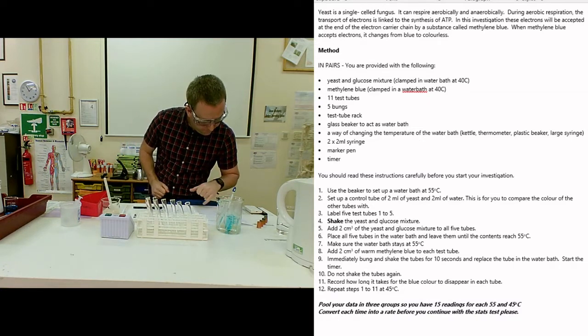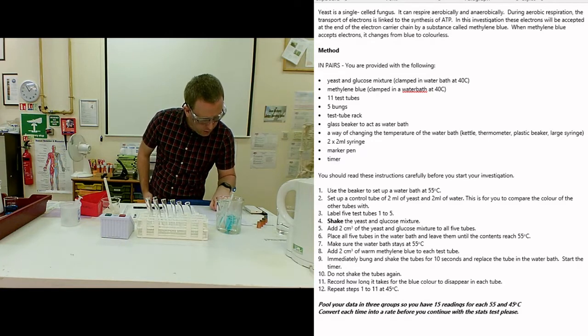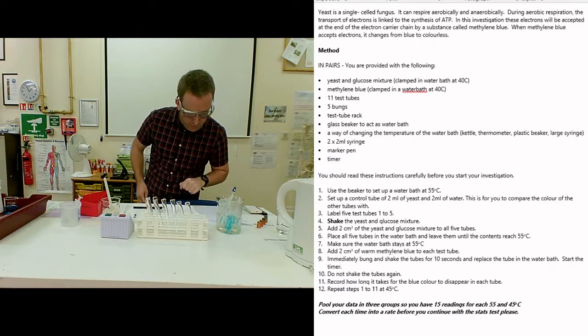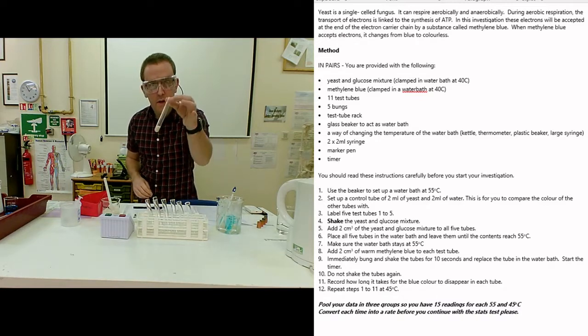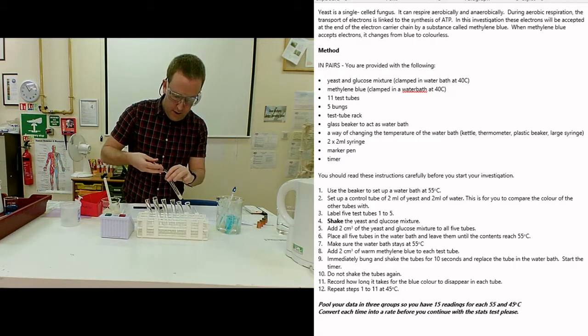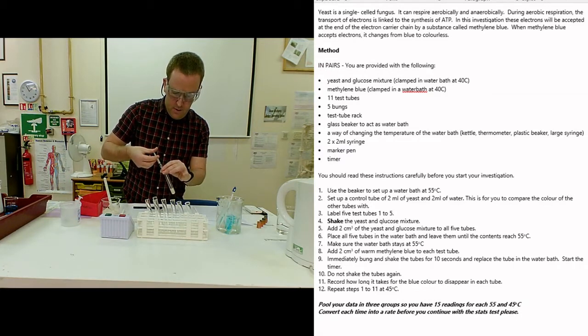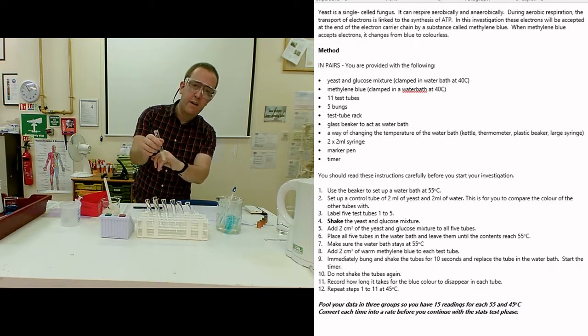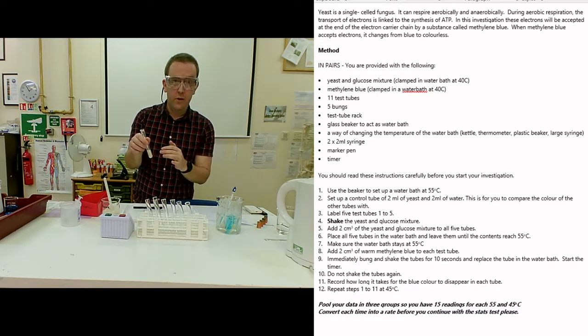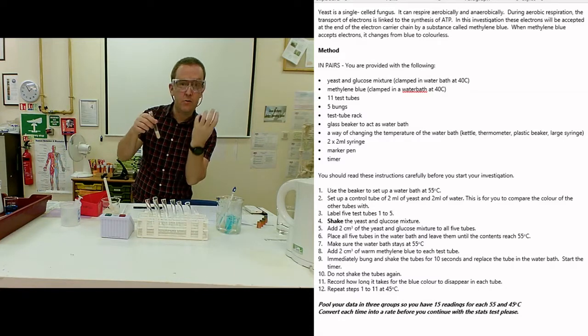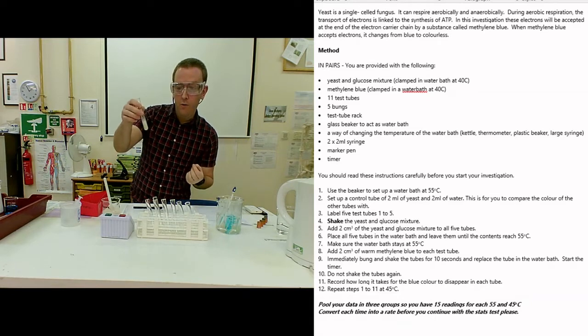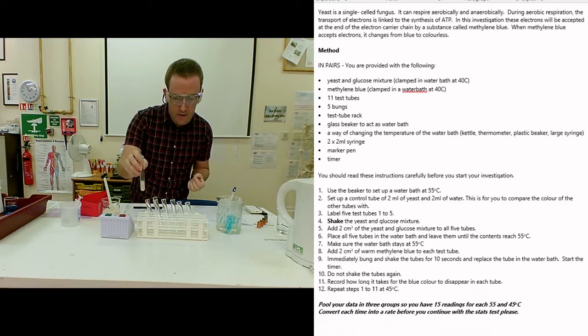Number two, set up a control tube of 2ml of yeast and 2ml of water. That's for you to compare to. There's my 2ml of yeast and here's my little syringe of 2ml of water. I'm going to put that in like that, and that's my standard for what the experiment should look like when it's finished. That's what I'm going to be comparing to, because one of the issues of this experiment is the subjective nature of it.